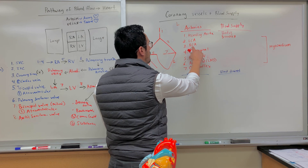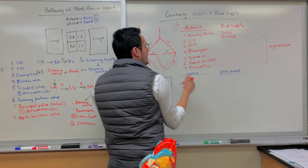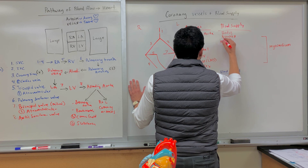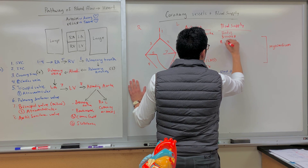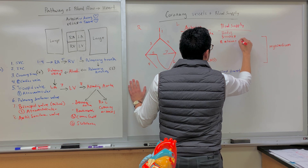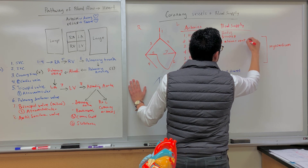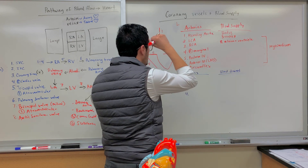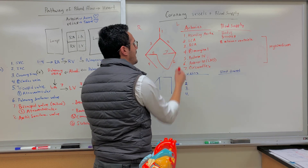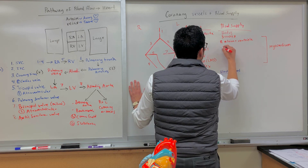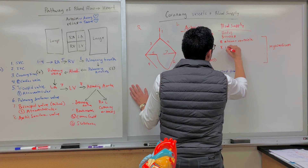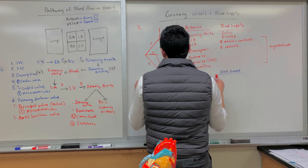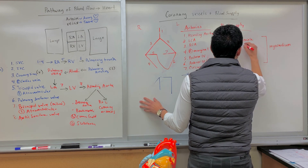So what does the right coronary artery supply blood to? The right coronary artery supplies the right atrium as well as the ventricle. The right marginal artery supplies blood to the right ventricle on the lateral side.